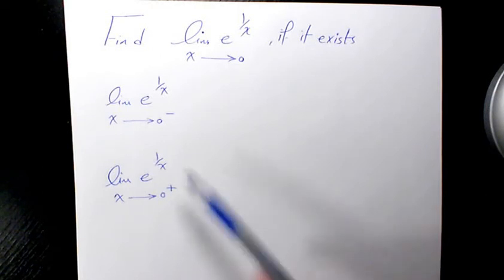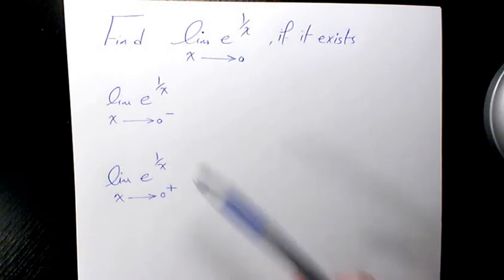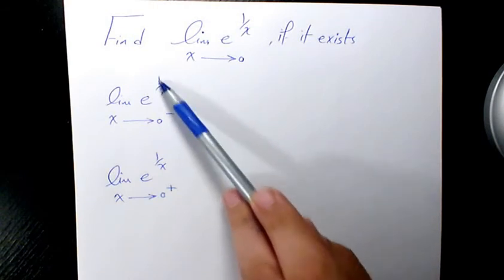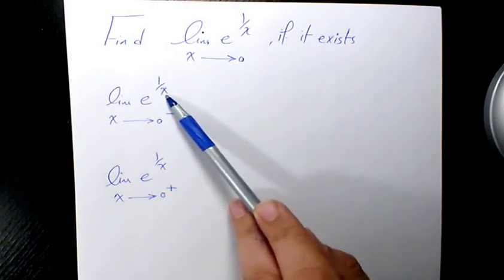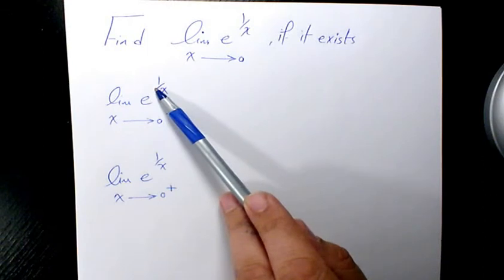So, left limit and right limit. Since we have 1/x, if we have 1 over 0 or some number very close to 0, this fraction is going to be very large.